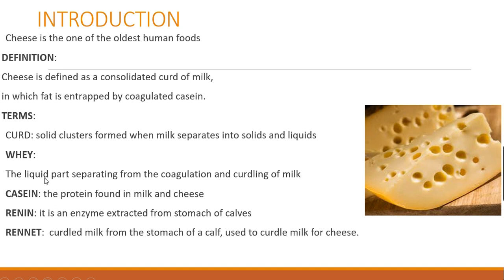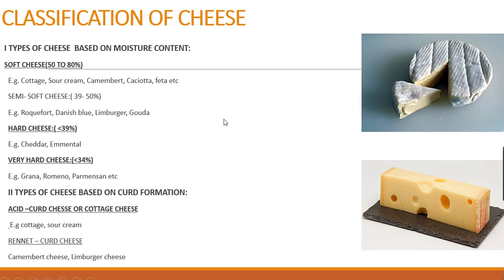Keep these terms in mind for further discussion: renin, casein, whey, and curd. The word cheese comes from the Latin word 'cassius,' from which casein is also derived. The earliest source is from the proto-Indo-European root where cheese is called 'quat,' meaning to ferment or to become sour — which is why cheese is a fermented, sour-tasting product.